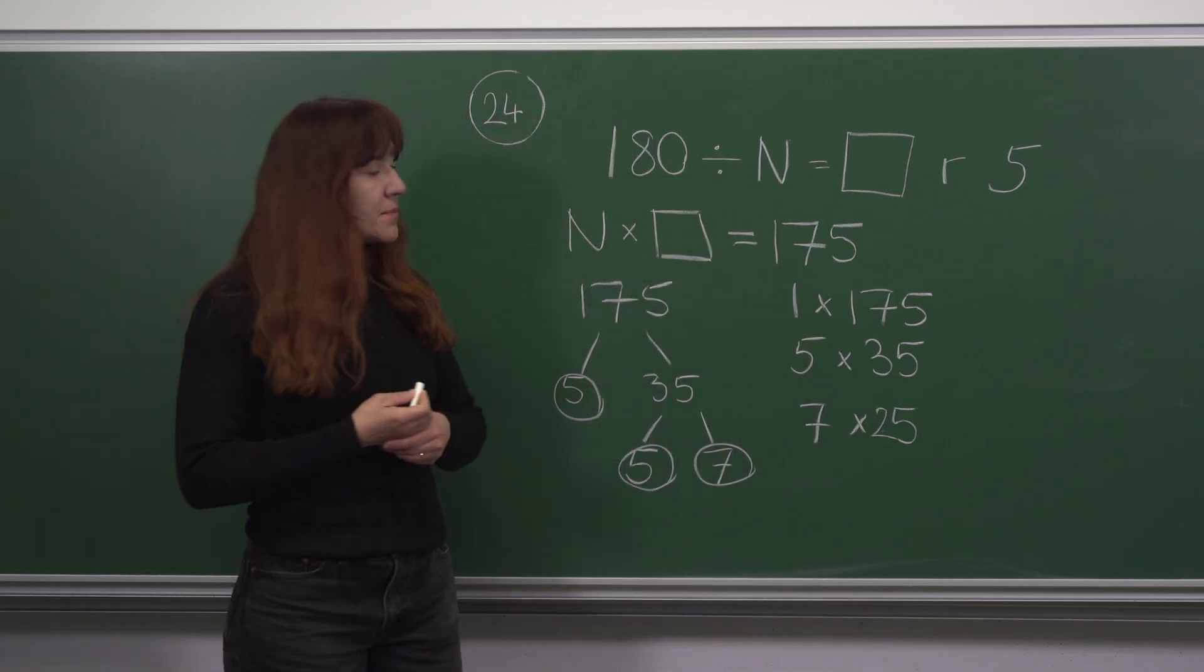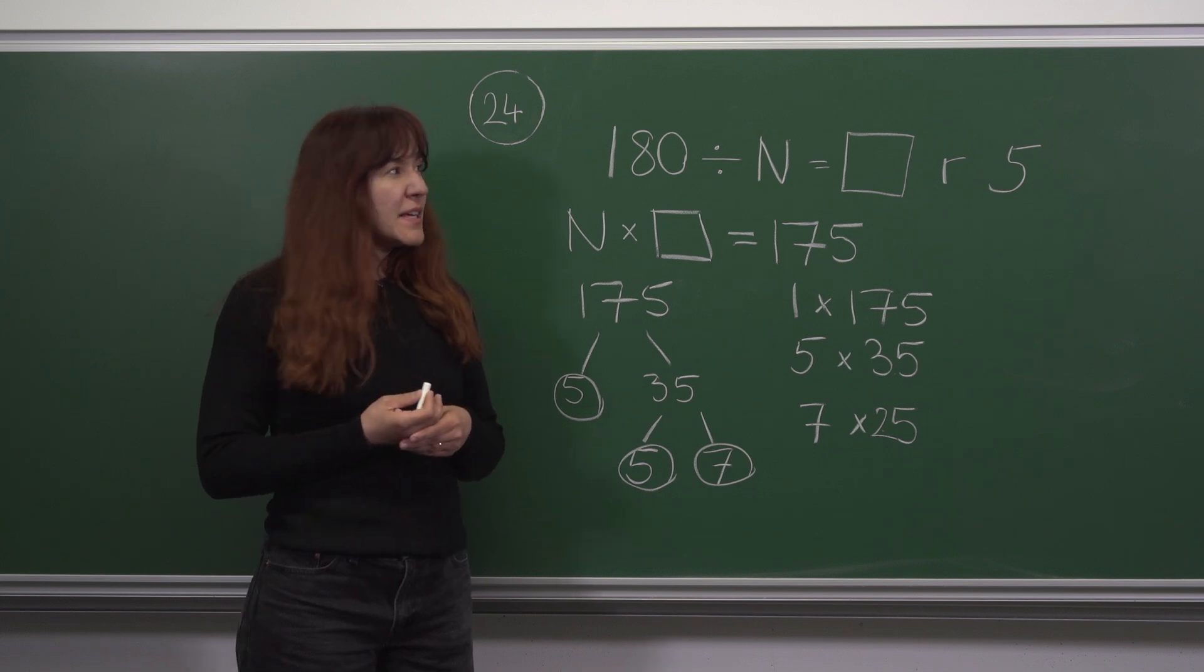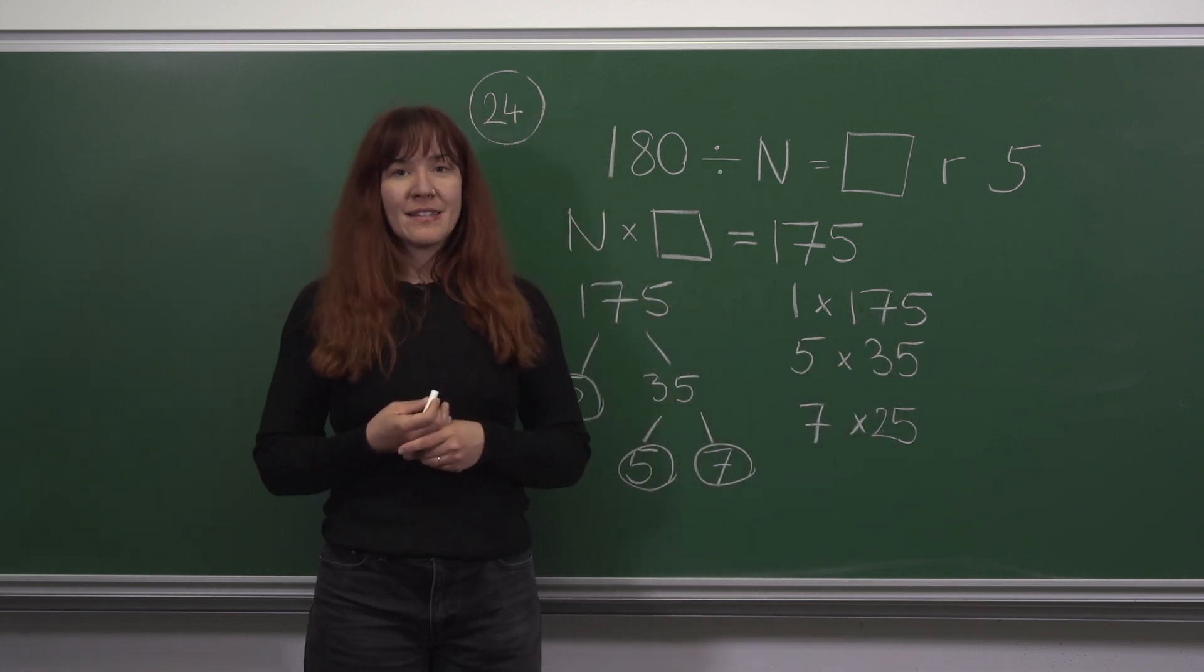Not all of these numbers can be n. n needs to be greater than 5, otherwise 5 wouldn't be a valid remainder. That gives us 1, 2, 3, 4 options for n.